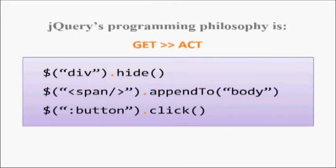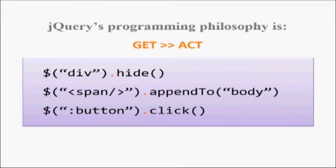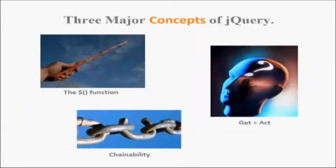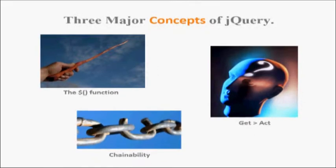jQuery's programming philosophy is get then act. First you get a selector — you get that element using a selector — then perform an action, like selecting a div then adding a class or changing the HTML. This is the chainability concept that jQuery provides. You can select once then perform various actions one after another on that particular DOM element. The three major concepts are: the dollar function, where to start your jQuery code; the get and act method, first getting the DOM element and performing an action; and the chainability concept.